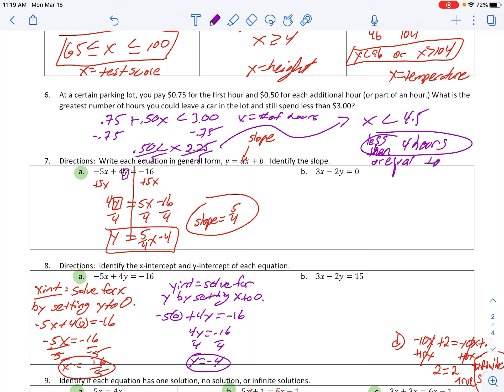Part B, let's get that into Y equals MX plus B or Y equals AX plus B. So, I get Y by itself. I'm going to subtract 3X from both sides. Then I'm going to divide both sides by negative 2. Two negatives make a positive. I'm going to leave it as 3 halves X.